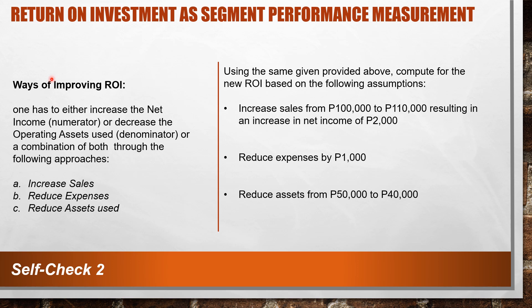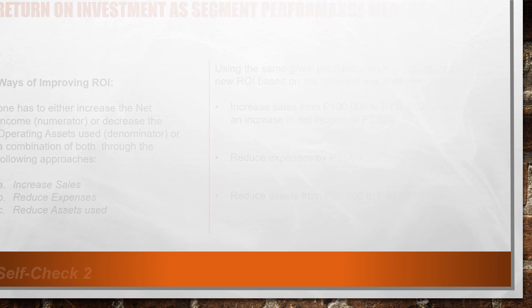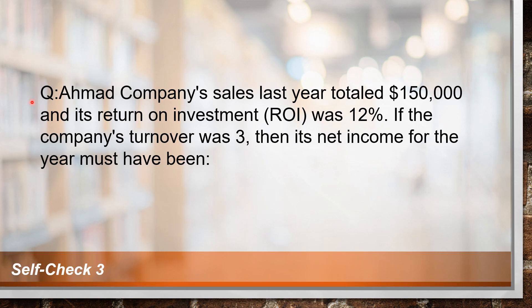Self-check number two: Using the same information from the previous problem, compute the new ROI for three independent assumptions: (1) sales increase from $100,000 to $110,000 resulting in a net income increase of $2,000; (2) reduce expenses by $1,000; (3) reduce assets from $50,000 to $40,000. Self-check number three: Ahmed Company's sales last year totaled $150,000 and its ROI was 12%. If the company's turnover was three, then its net income for the year must have been...